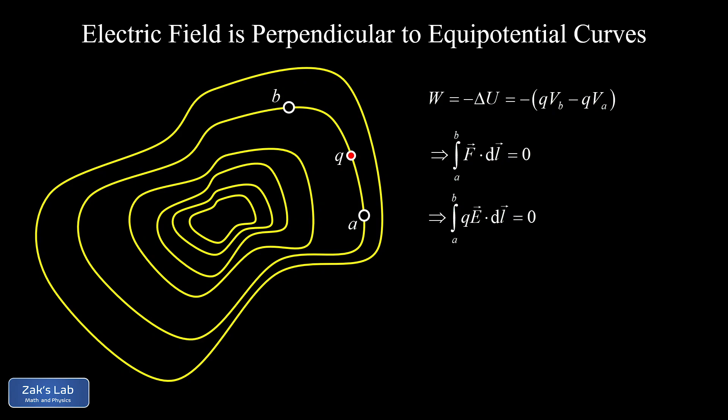Now the only way this integral can vanish for every arbitrary path is if the dot product in the integral vanishes. So we just figured out that the electric field dotted into each path increment must be equal to zero. And this can only happen if the electric field is perpendicular to each path increment along the curve. So that's what it looks like geometrically. And this is exactly what we set out to prove. The electric field is perpendicular to the equipotential curves at every point along the curve.